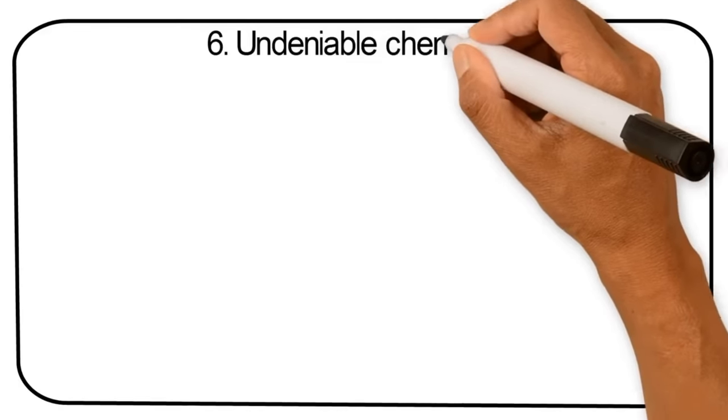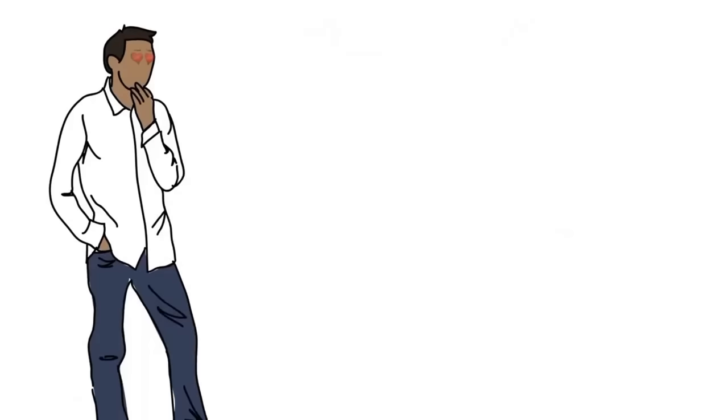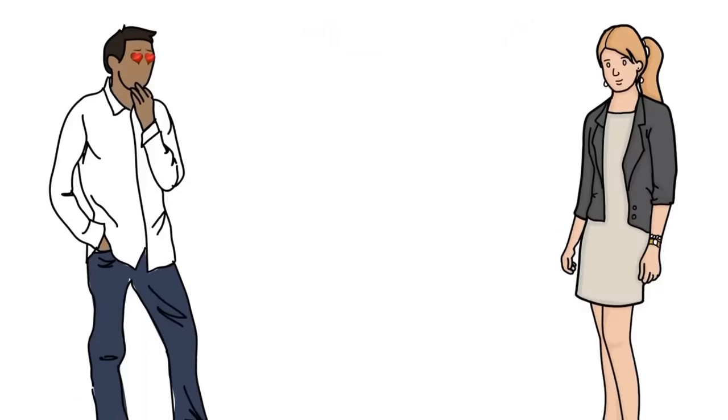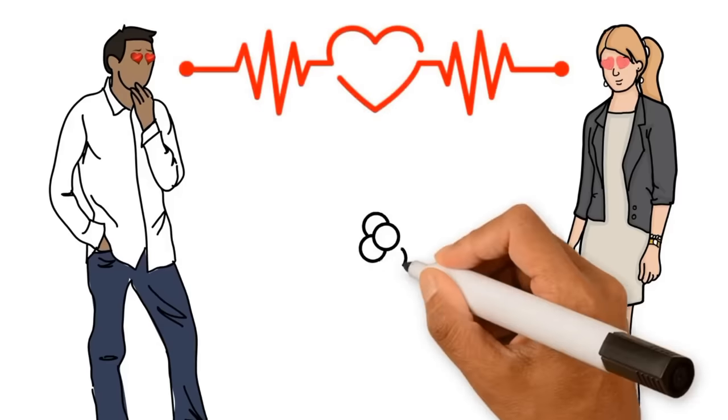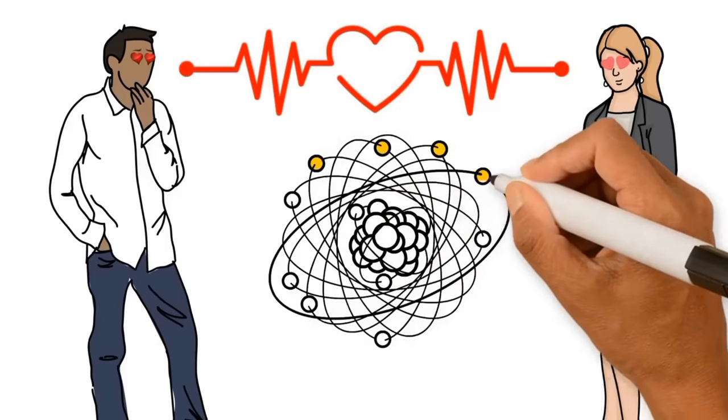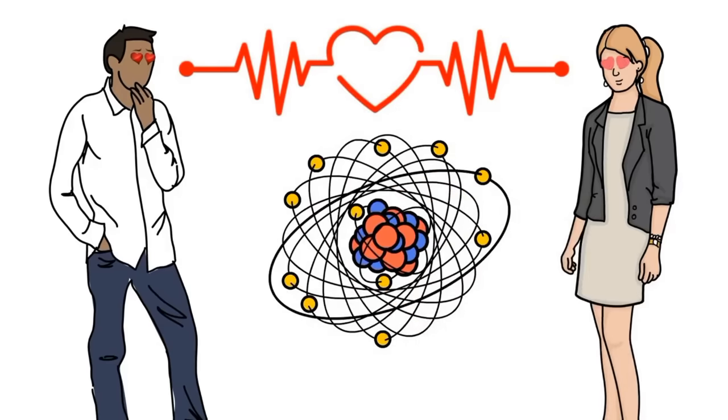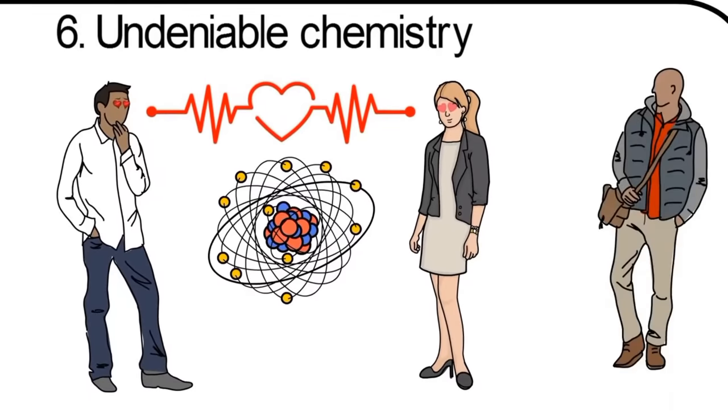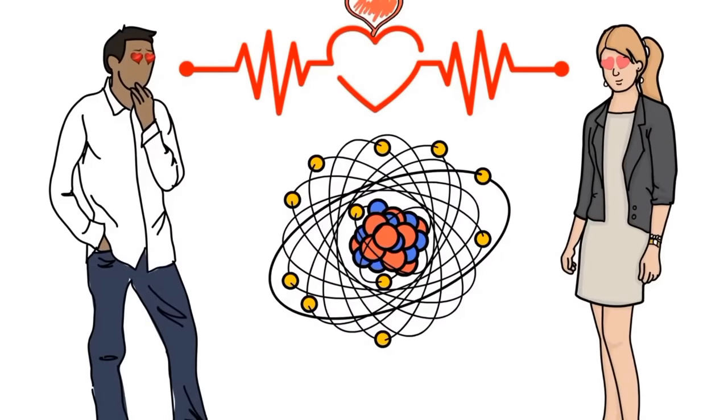Number 6, undeniable chemistry. Do you and the object of your affection have wild chemistry together? If so, you can bet that you're sharing sexual tension as well. Having great chemistry is one of the signs of sexual tension that even the people around you cannot fail to notice.